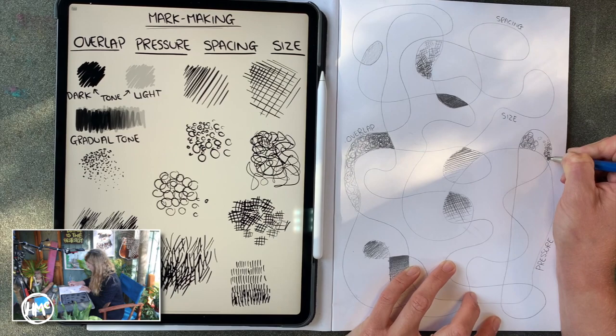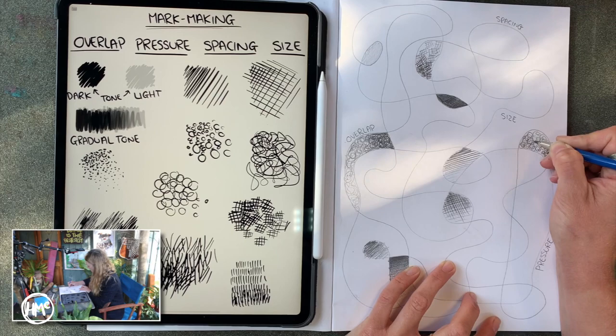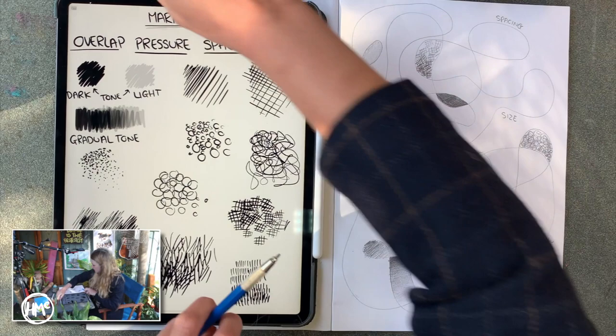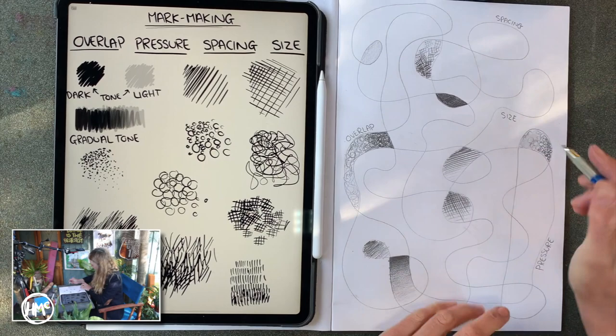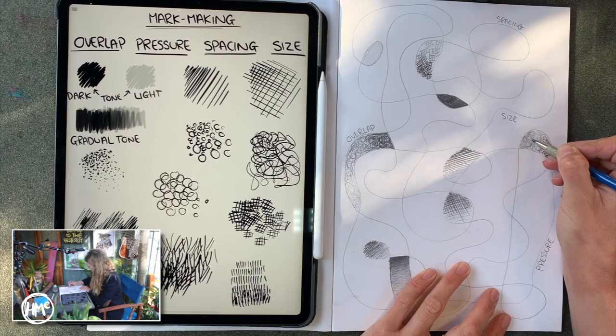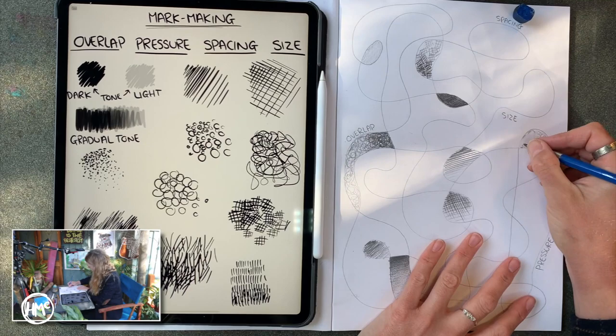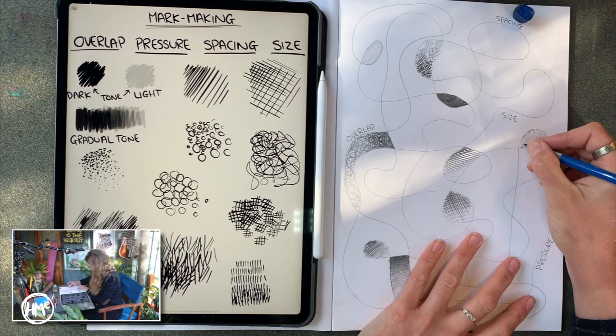Now, because that blackbird's distracting me, I've just realised that this bit's too dark. So remember, you can always lift. Lift that graphite off, like so, and rework over the top, like that. I'm going to do it again even. I'm not happy with that still. There we go, so big circles. And then smaller circles, pressing harder and overlapping at the end there. And you should get that dark to light again.